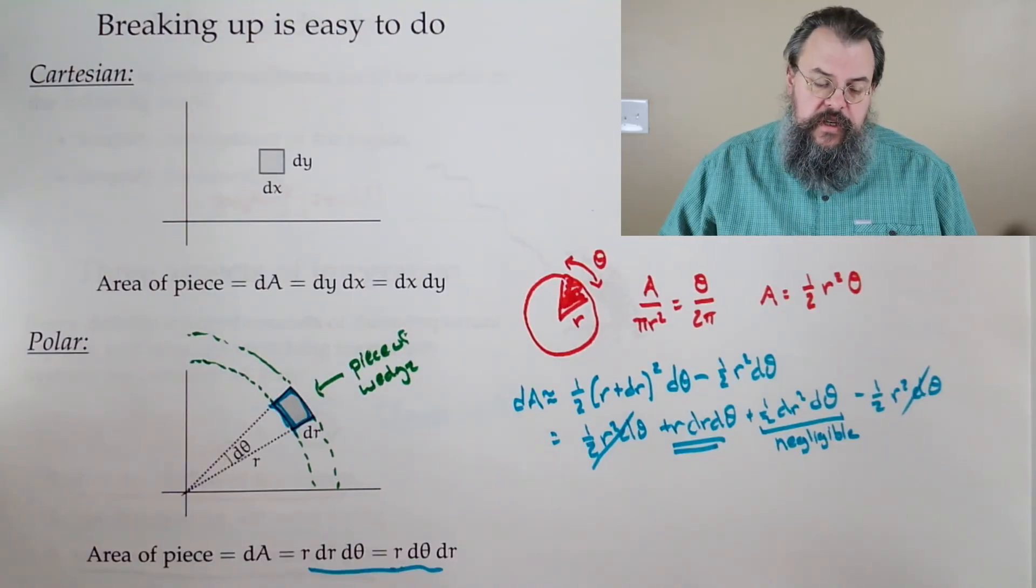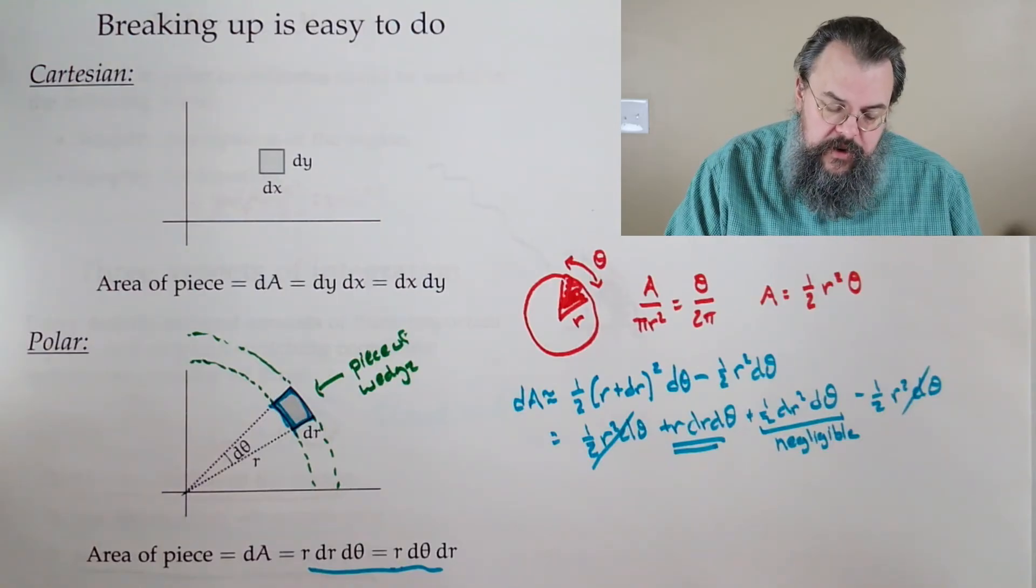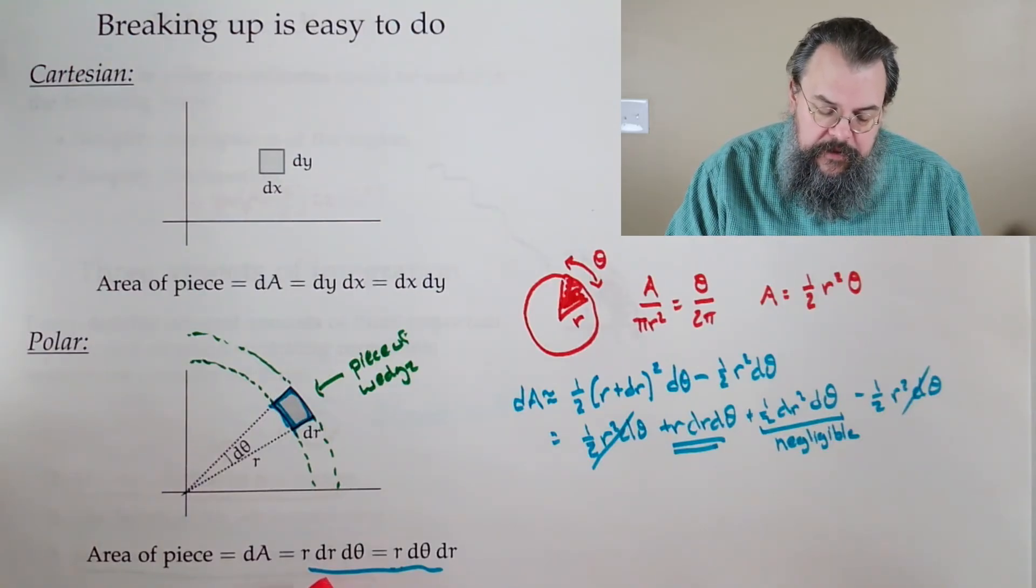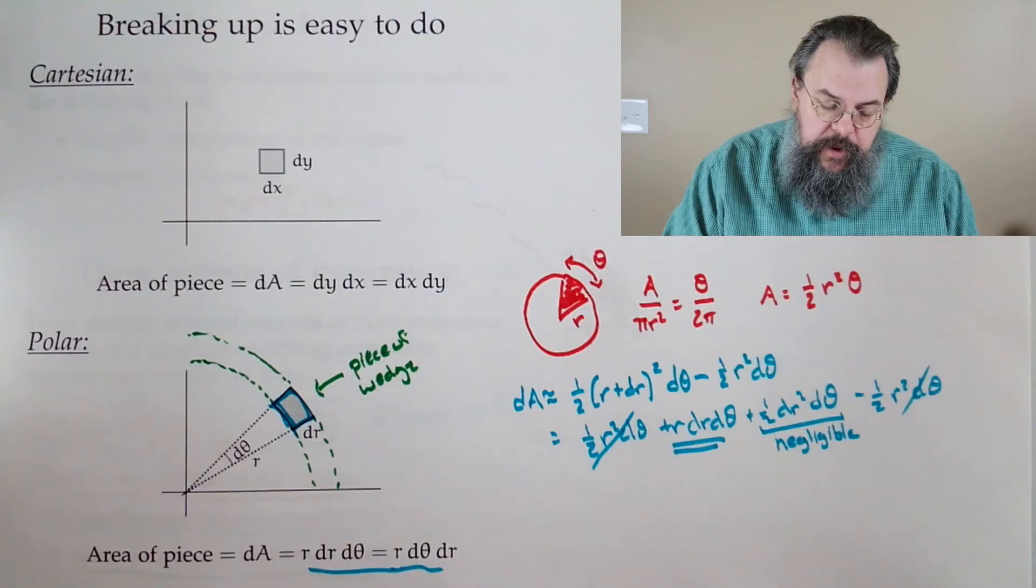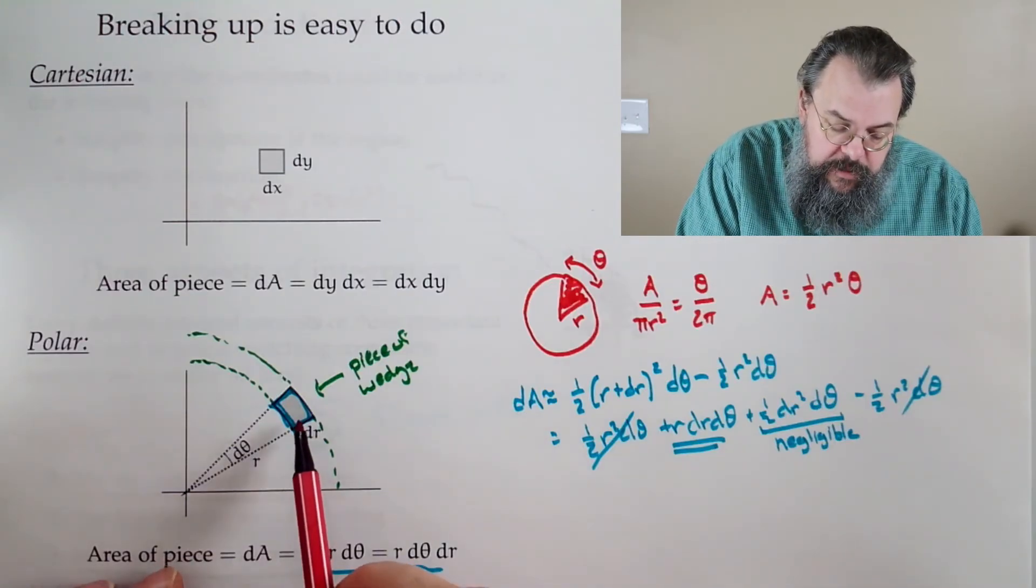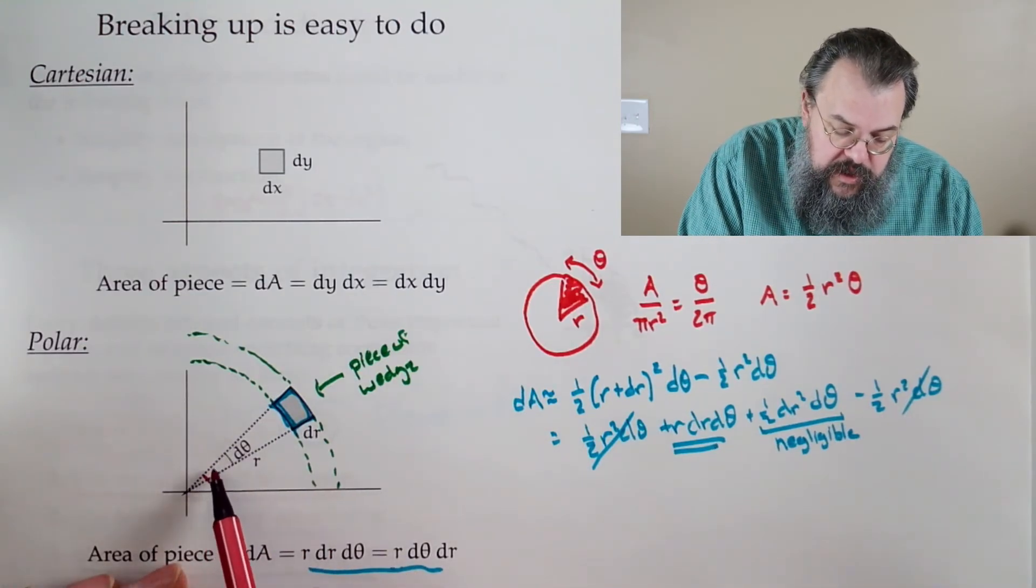It says, look, so notice if I have the same dr and d theta, I can compare. See, if I compare this piece versus say something here, where look, it's the same change in theta,